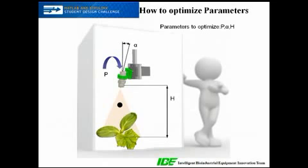The parameters which we could decide are p, that's the pressure, h, that's the distance between nozzle and ground, alpha, that's the angle of the nozzle.